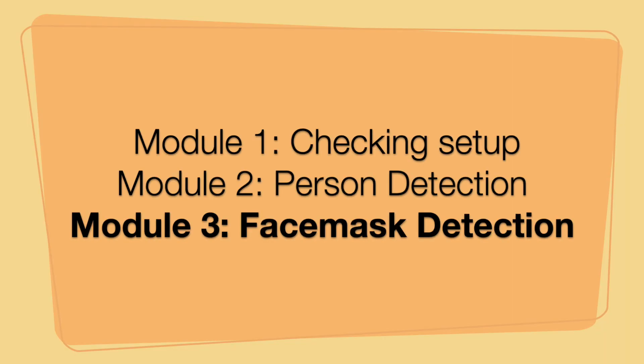Now that we have our own model that can detect whether or not a person is in the camera view, we're going to use transfer learning to make the model learn whether or not there is a face mask being worn by the person. To do this we use training examples from Flickr — both positive examples of people with face masks and negative examples where they're not wearing face masks.